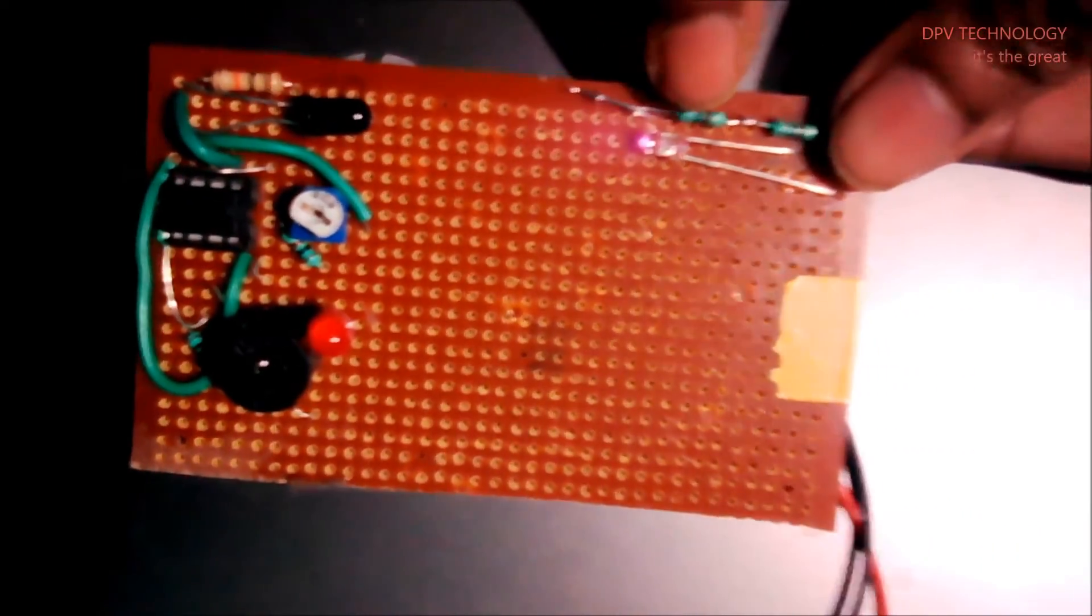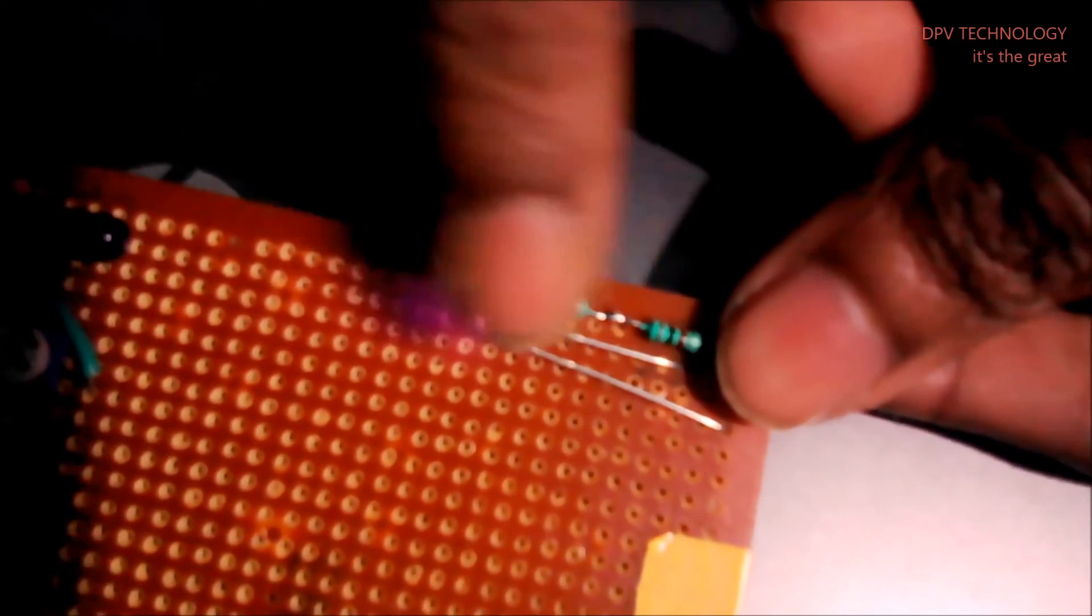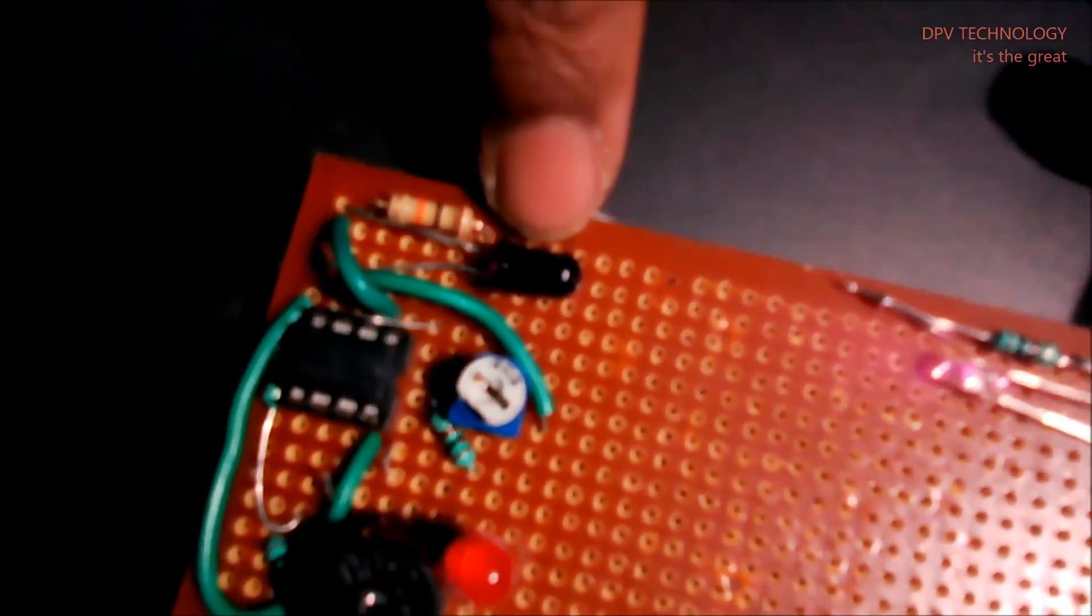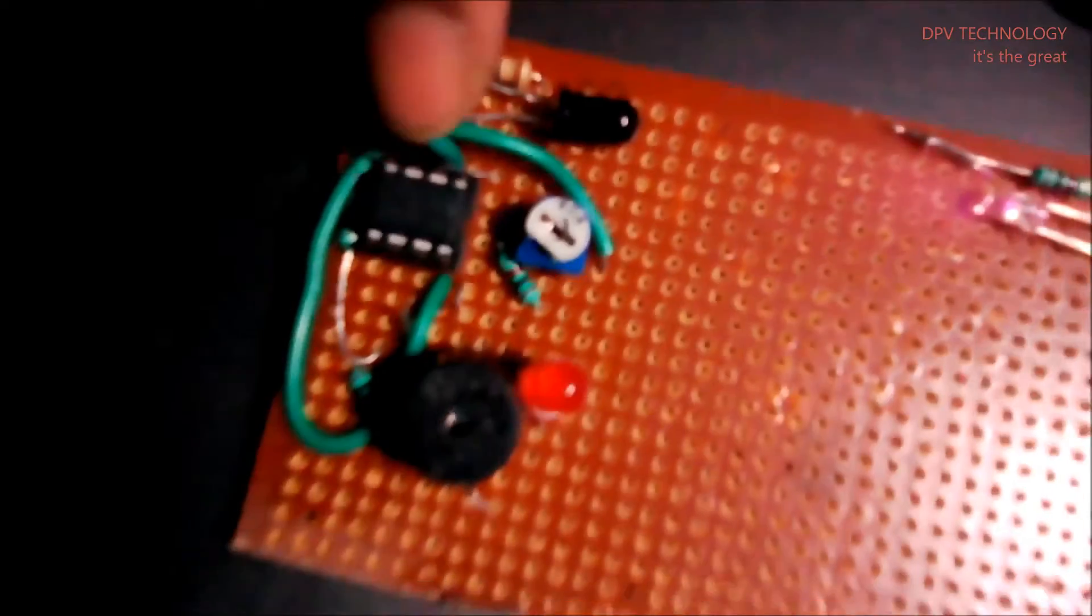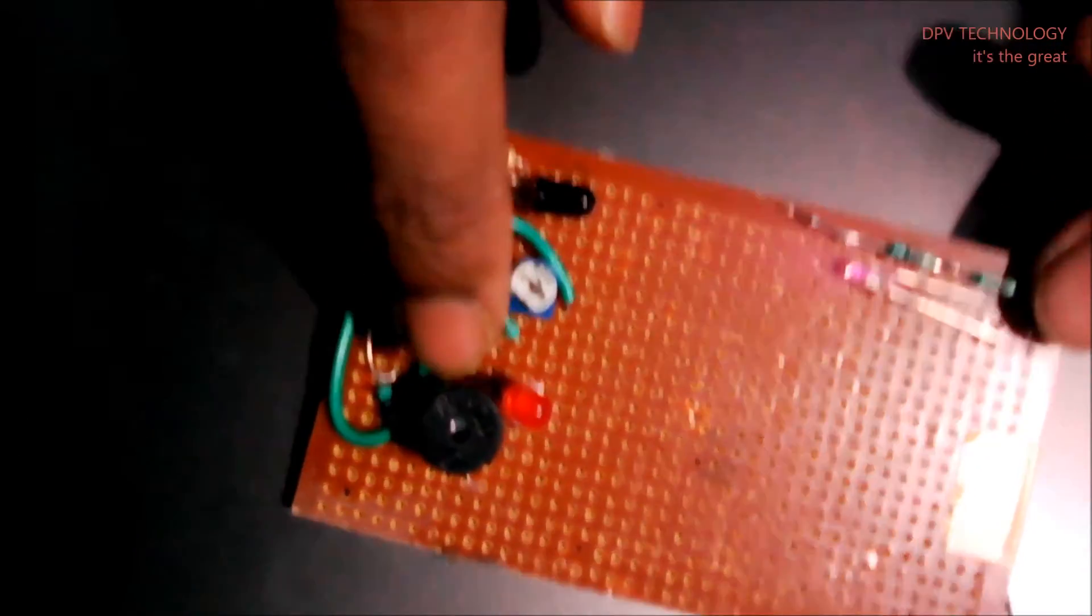This is the IR transmitter, and this is the IR receiver, and this is LM358. This is the buzzer.